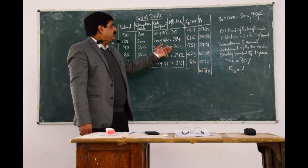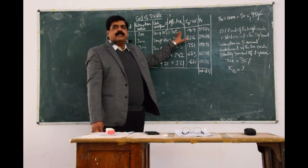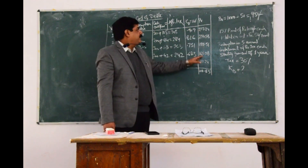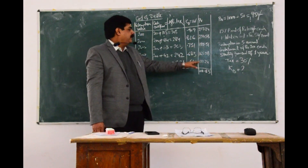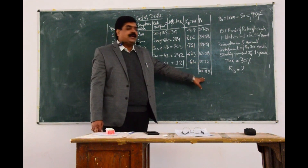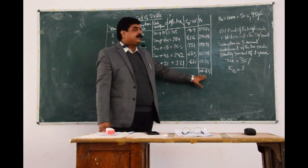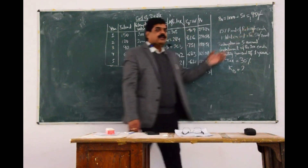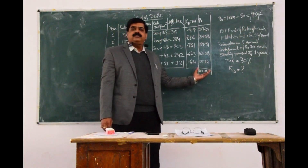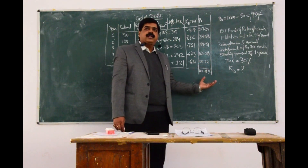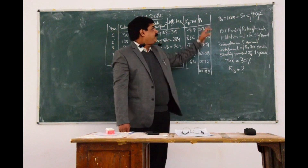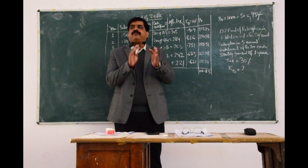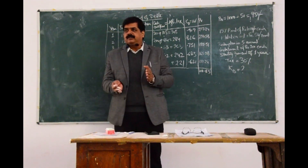Multiplying the after-tax cash flows with the discounted value of rupee 1 at 10%, we get present values of 277, 234, 197, 165, and 137, and the summation is ₹1011.95. But we need to get ₹950 — we have received more than ₹950. That means this present value has to be reduced, so the value of KD has to be increased. Therefore 10% is not the cost of capital; it should be more than 10%.